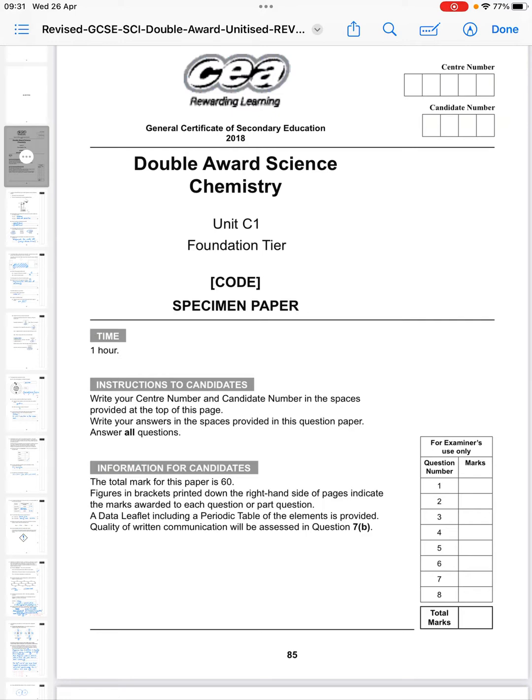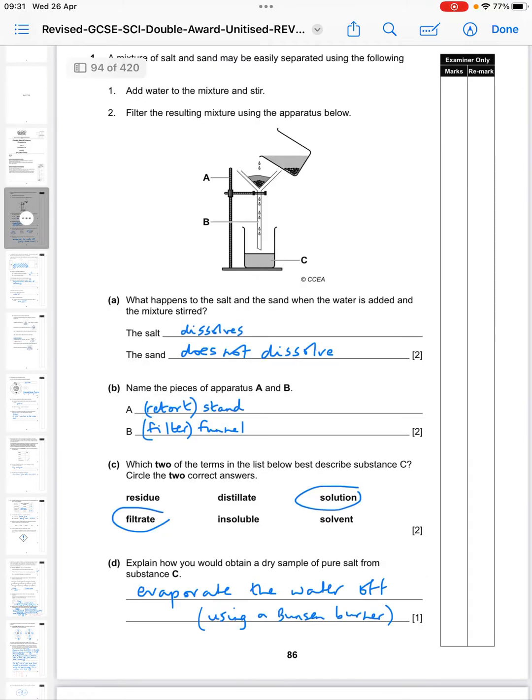Hi, today I'm going to take a look at the specimen paper for CCEA's Double Award Science, the chemistry component. I'm looking at unit C1 and this is the foundation tier paper. So here we go.